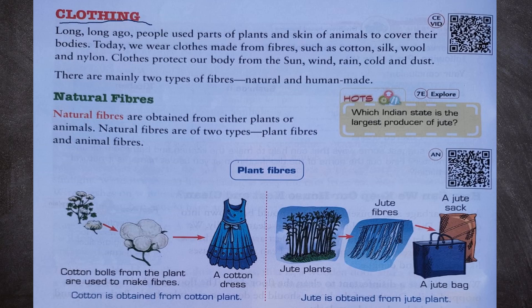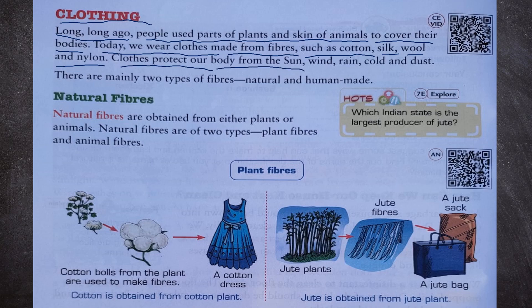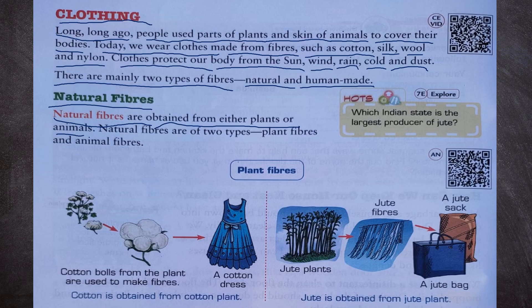Clothing: long ago, people used parts of plants and skin of animals to cover their bodies. Today we wear clothes made from fibers such as cotton, silk, wool, and nylon. Clothes protect our body from the sun, wind, rain, cold, and dust. There are mainly two types of fibers: natural and human-made. Natural fibers are obtained from either plants or animals and are of two types: plant fibers and animal fibers.